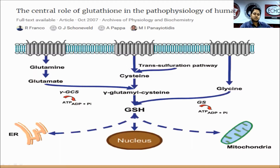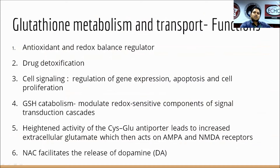What is glutathione and why is it so important? Glutamate combined with cysteine along with glycine forms glutathione, and availability of cysteine is the rate-limiting step in production of glutathione. Glutathione has wide varieties of action including antioxidant and redox balance regulation, drug detoxification, cell signaling, and glutathione catabolism. Activity of the cysteine-glutamate antiporter, which leads to an increase of extracellular glutamate, has been one of its implicated actions.